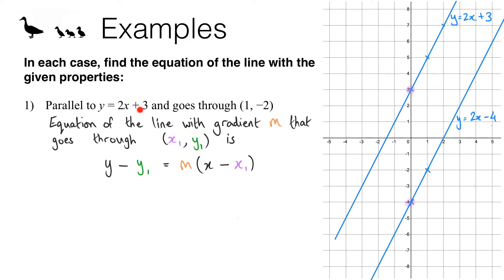Let's see how that works with this particular question. We want the line parallel to y equals 2x plus 3, so we want gradient m to be 2, and we want it to go through the point (1, -2). So our x-coordinate is 1 and our y-coordinate is negative 2. That means x1 equals 1 and y1 equals negative 2, and now all I need to do is substitute those into the formula.